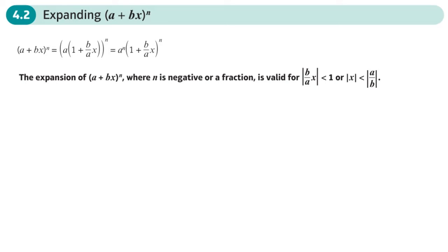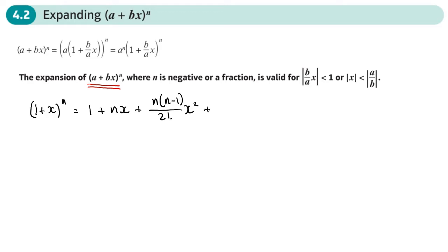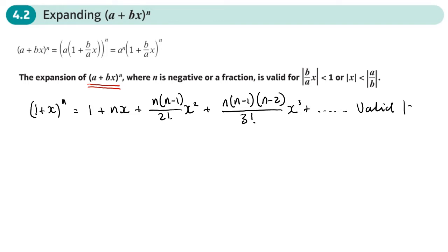This is the second section in the binomial expansion chapter. In this part we're going to be looking at how we expand (a + bx) to the power n. We've just done (1 + x) to the power n and we know what the expansion of that is, so I'll write out maybe the first couple of terms. It's in the formula booklet, but by the time you've done this a few times you'll probably remember it — just make sure you remember it correctly.